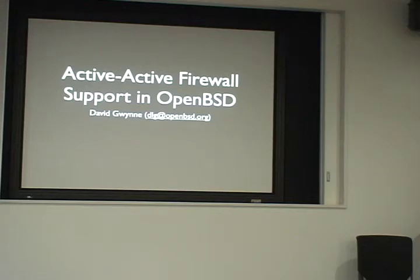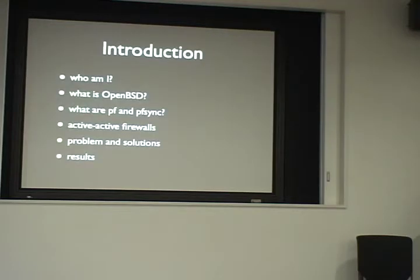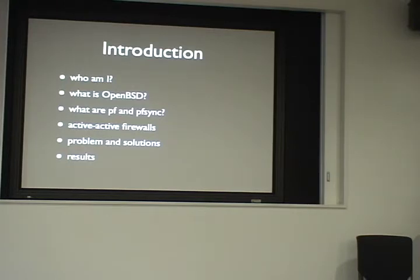So, if I go too far, please tell me and I'll slow down. I'm going to talk about active-active firewall support in OpenBSD. This is a new introduction. Basically: who I am, what is OpenBSD, what are PF and PFSync, what's the difference between active-active and active-passive, the problem with the current situation, the solutions I came up with, and some results.